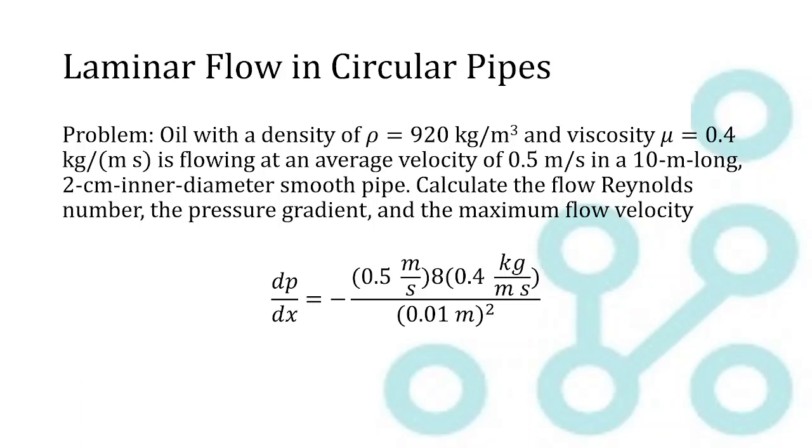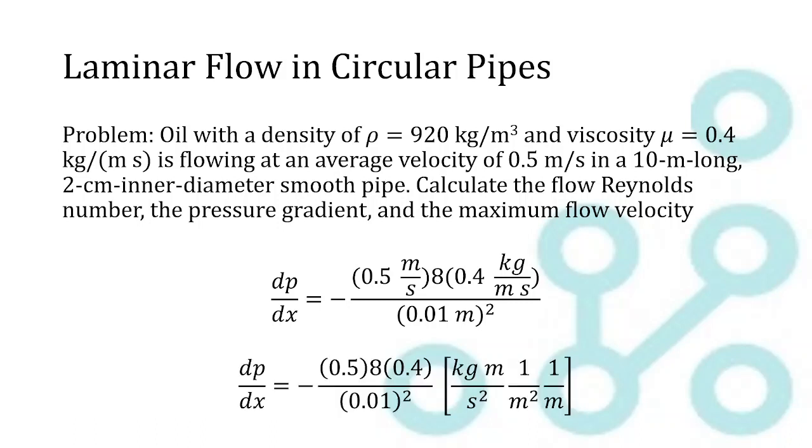So this is what that looked like. dp over dx equals negative 0.5 meters per second times 8 times 0.4 kilograms per meter second, all over 0.01 meters squared. So it's important to keep track of units here just to make sure that we're in proper units, that we've done everything correctly. So we separate the units out to the right.